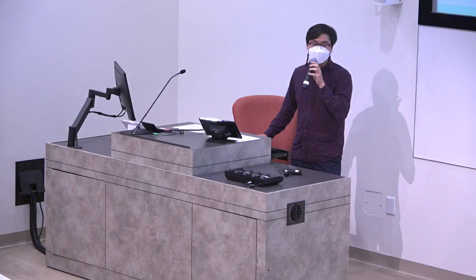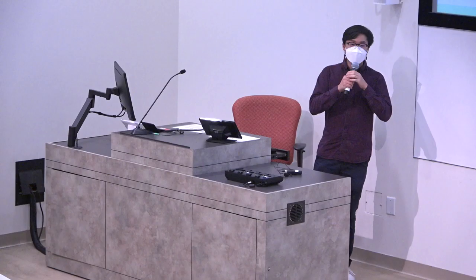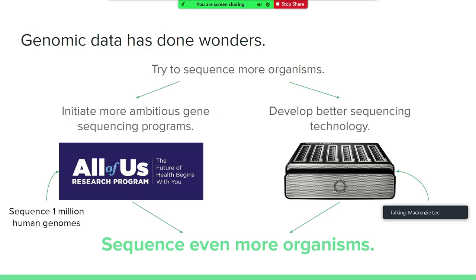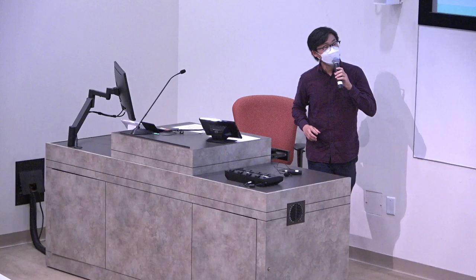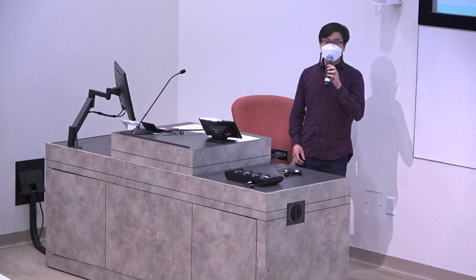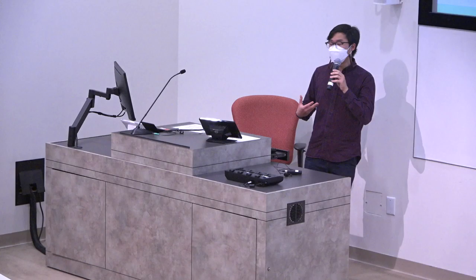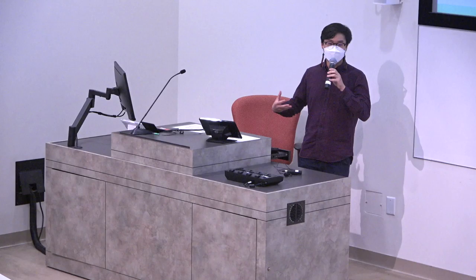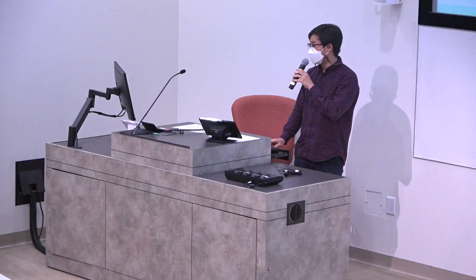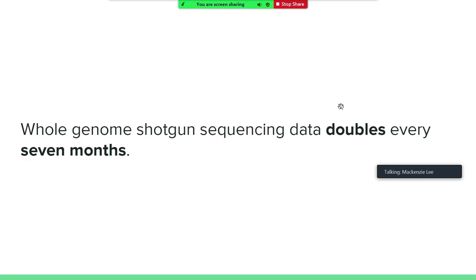Genomics data as a whole has done wonders for us, and so the rational thing to do is to sequence more data, sequence more organisms. Because of that, there has been the desire to sequence more and more. We have initiated more and more ambitious programs, such as the NIH All of Us Research Program, which tries to sequence one million human genomes in order to advance personalized medicine. We've also developed better sequencing devices — this little thing actually sequences four terabytes per run. The desire and capability to sequence more and more organisms leads to just a data deluge. The amount of data we have on genomics has increased exponentially; in fact, the whole genome shotgun sequencing data actually doubles every seven months.